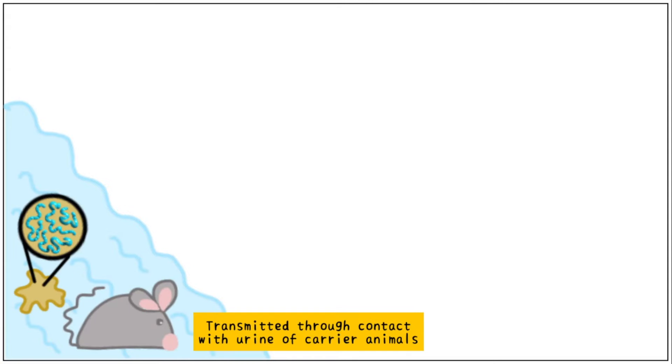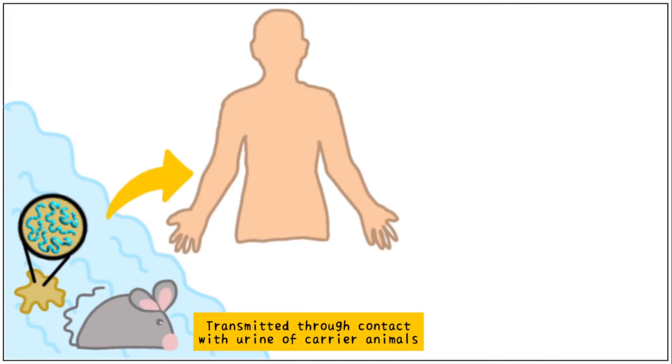How does this infection spread? Here is a water body — it may be a lake, a river, a flooded field, or anything else. Animals such as rats which carry Leptospira contaminate this water through their urine. When humans come in contact with this water, the disease spreads.